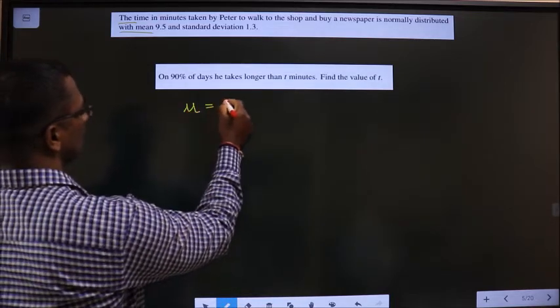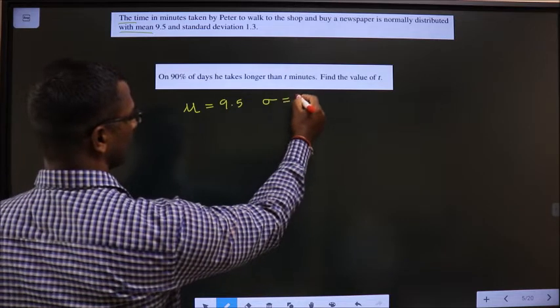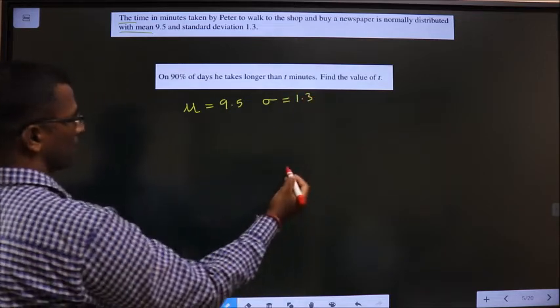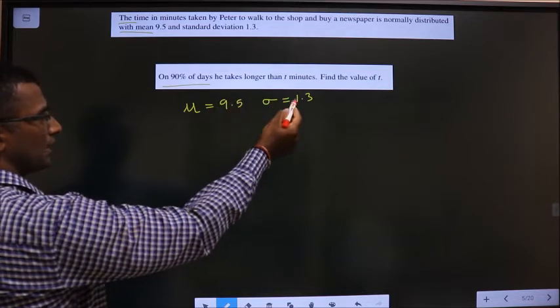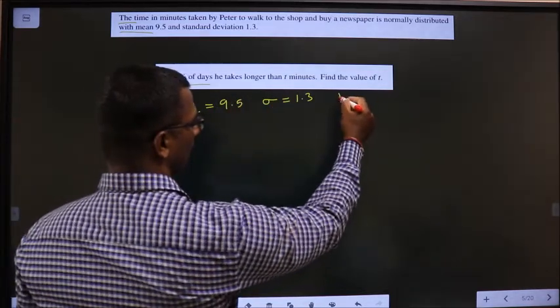Mean is 9.5, standard deviation is 1.3. Now, on 90% of the days, he takes longer than T minutes. Find the value of T.